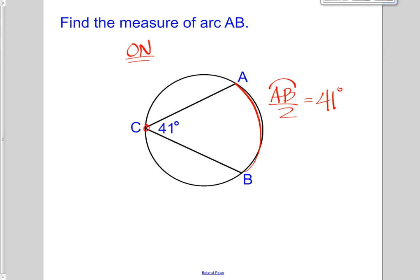Right? So it's a little bit different because I'm given the angle and I'm trying to figure out about the arc. But it's the same relationship. The arc divided by two is equal to the angle. And so, if I solve for this, then my arc AB is going to be equal to 82. Pretty simple.